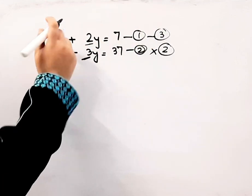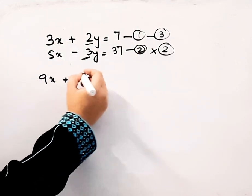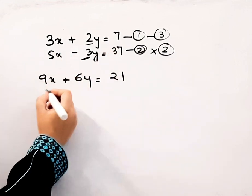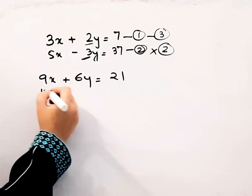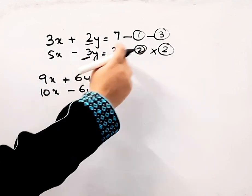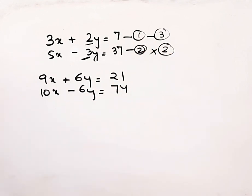So 3 times 3 is 9x, plus 3 times 2 is 6y, 3 times 7 is 21. Now equation 2 will become 2 times 5 is 10x, minus 2 times 3 is 6y. This 37 times 2 will become 74.